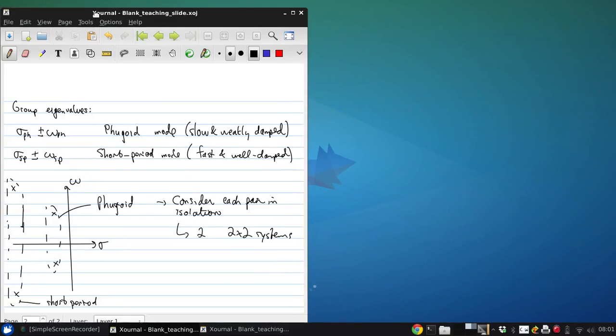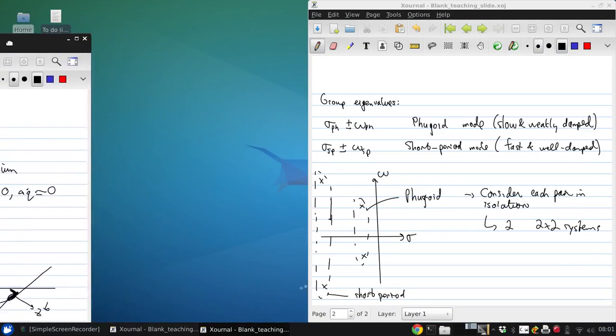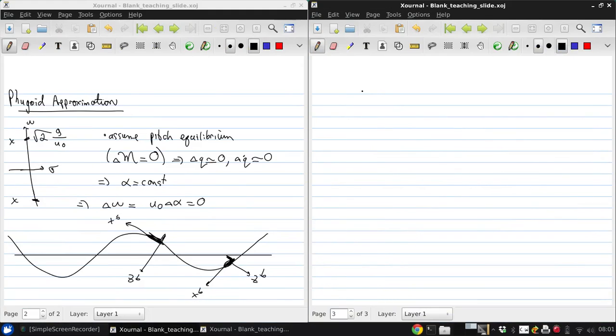So the Fugoid is governed by, under those simplifying assumptions, the following two by two Fugoid system. It's delta U dot and delta theta dot are the only variables we haven't constrained to be zero, as given by XU minus ZU over U0, zero, times delta U delta theta.